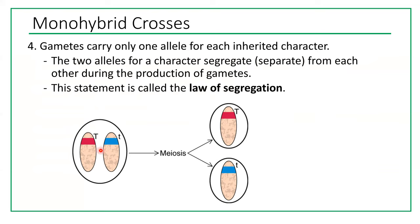For example, if your dad has an allele for being tall and an allele for being short, about 50% of his sperm will carry the dominant allele and 50% will carry the recessive allele. It is up to chance which sperm fertilizes the egg. Your dad never gives you two alleles, and your mom never gives you two alleles — they each give you one allele for every single gene.